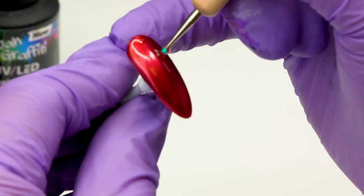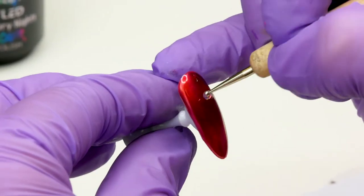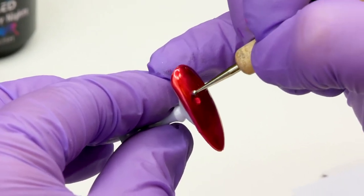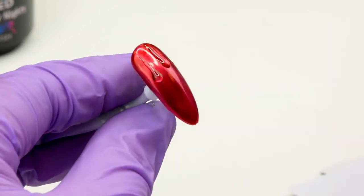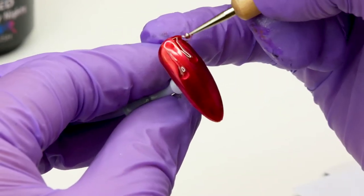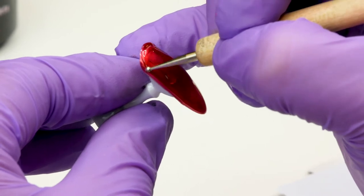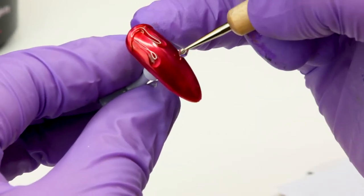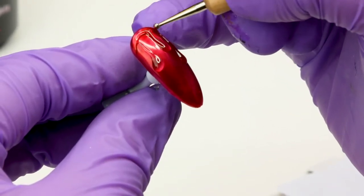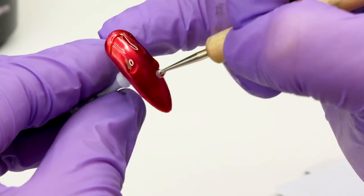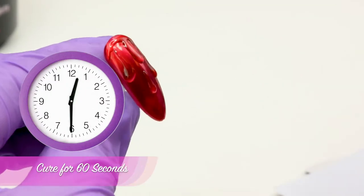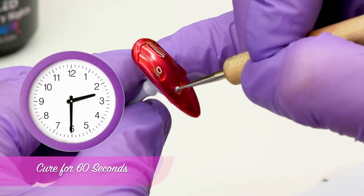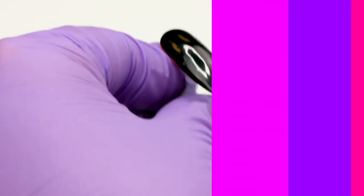Pull the Magma nail out. With the top coat that's on the form, we're just going to add drips from the top of the cuticle. We're going to put that in the lamp to cure it for 60 seconds because it is a top coat.